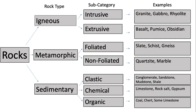Clastic, chemical, and organic with examples of each. Conglomerate, sandstone, mudstone, and shale are examples of clastic sedimentary rock. Limestone, rock salt, and gypsum are examples of chemical sedimentary rocks. Coal, chert, and some limestone are examples of organic sedimentary rock. Notice that limestone can be either chemical or organic.